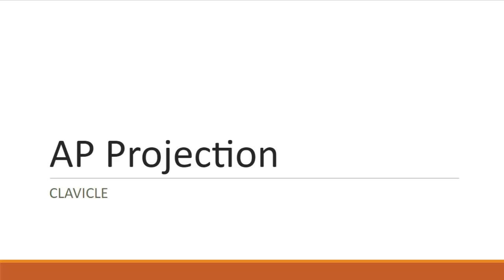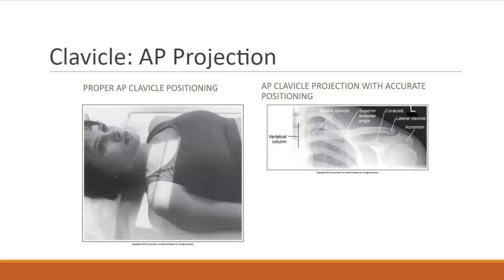Welcome to the image analysis for the AP clavicle. Image analysis guidelines for the AP projection of the clavicle state that the medial clavicular end should lie next to the lateral edge of the vertebral column. The clavicle and superior scapular angle are visualized at the same transverse level. The mid clavicle is at the center of the exposure field. The clavicle and acromion process are included within the exposure field.